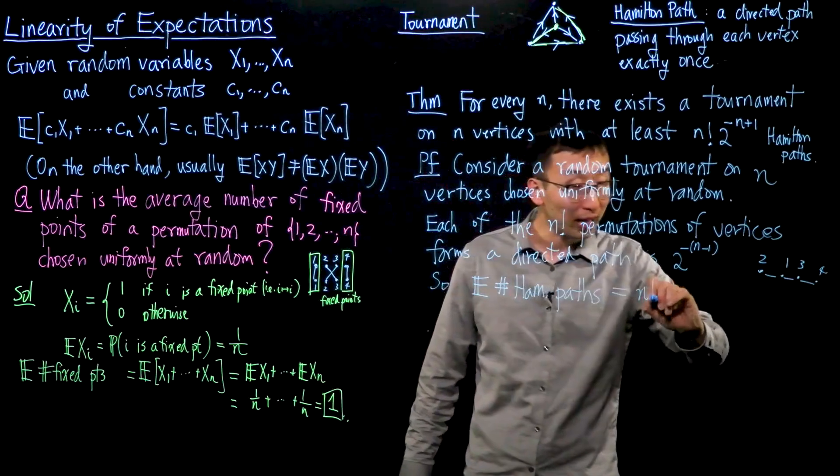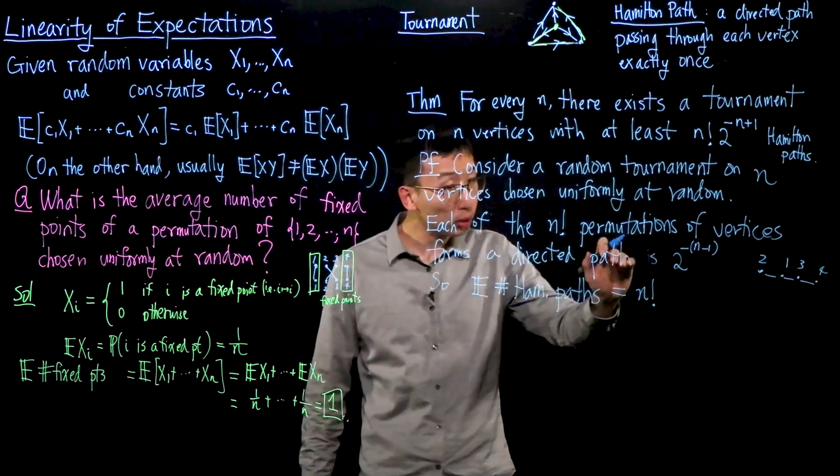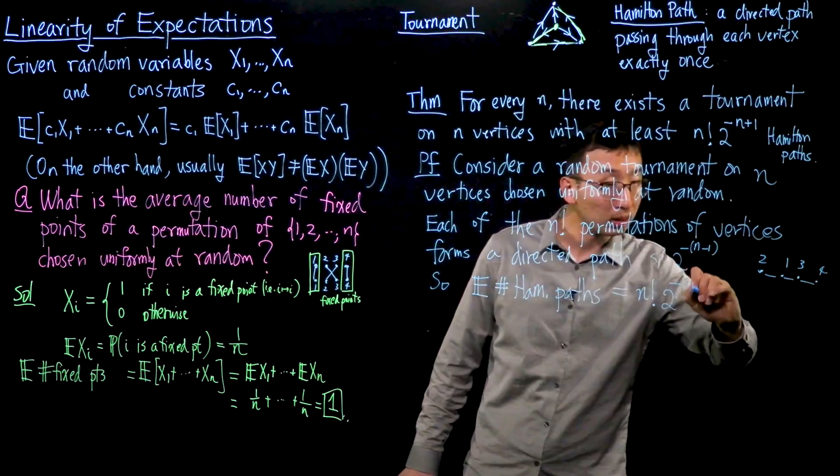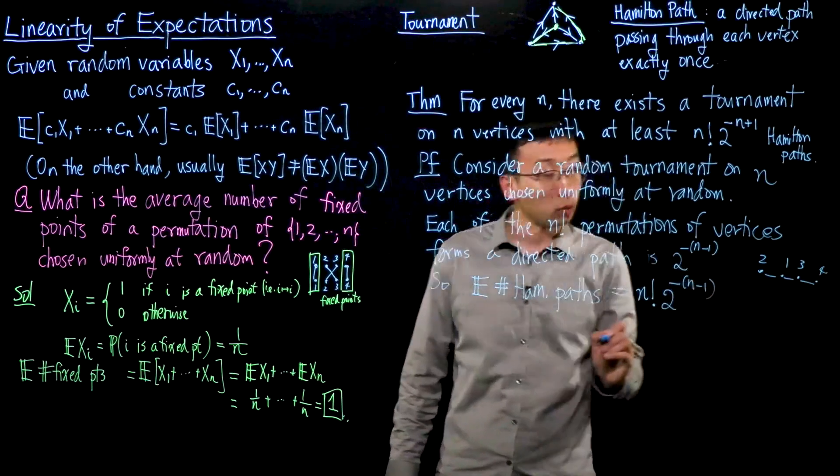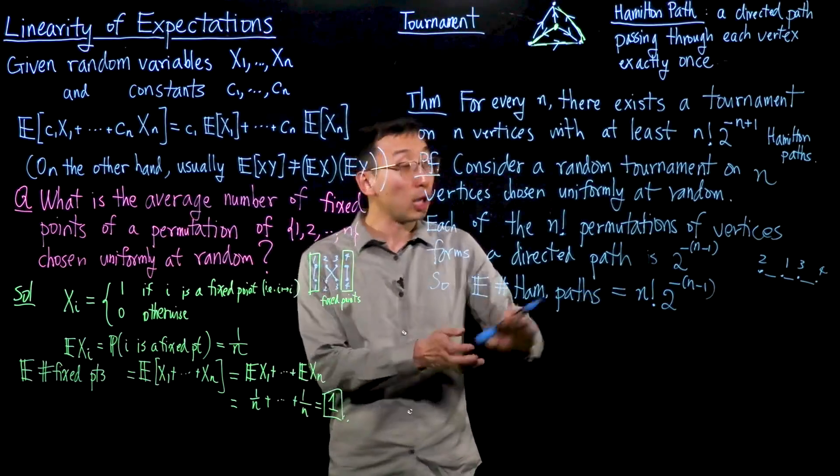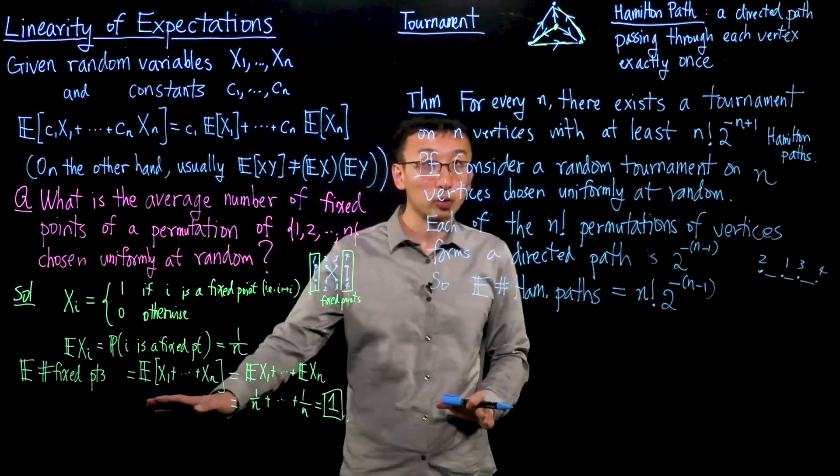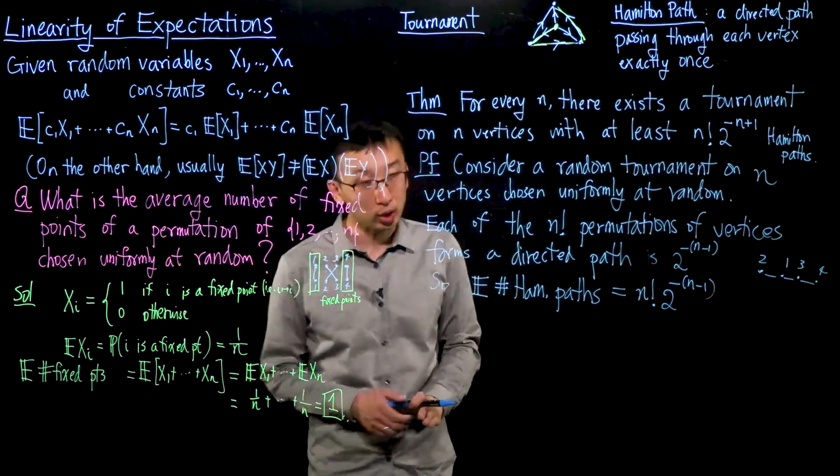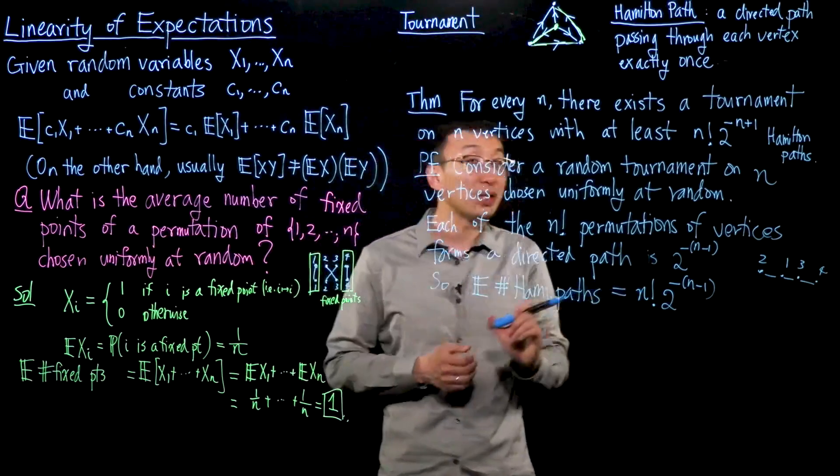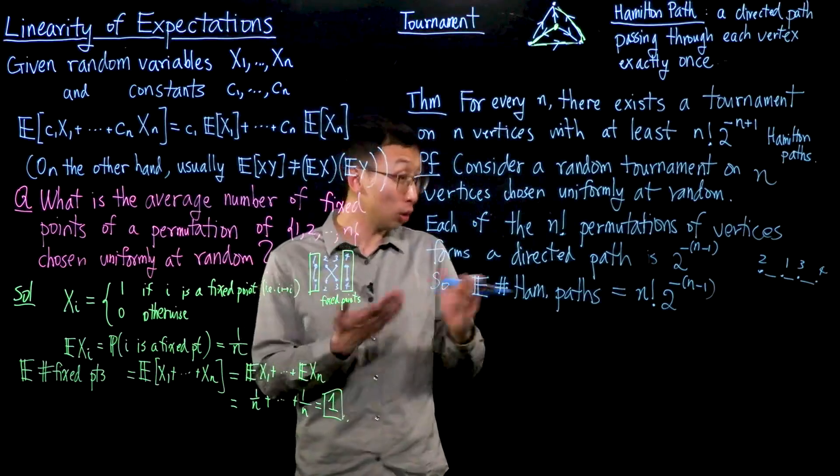And now we invoke the linearity of expectations to claim that the expected number of Hamilton paths must then be: each of the n factorial permutations has probability 2 to the minus (n-1) of being a directed path. So this is a calculation that is analogous to the calculation we did in the earlier part of this video. This is what happens in expectation on average.